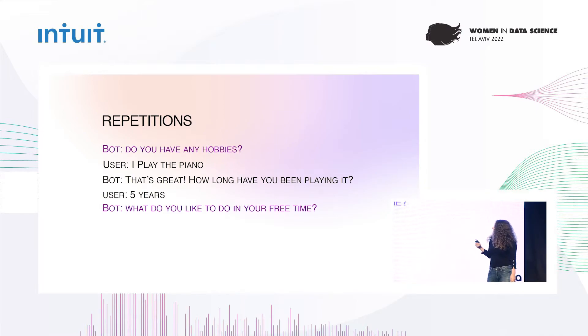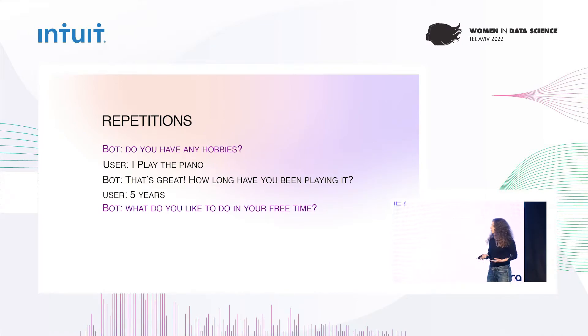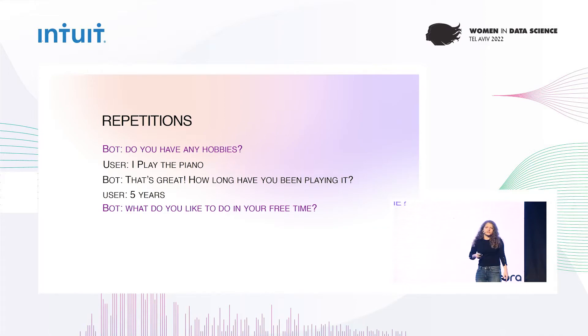When the model asks the user 'Do you have any hobbies?' and then the user responds, and then the bot asks 'What do you like to do in your free time?' — which is essentially the same question over again.